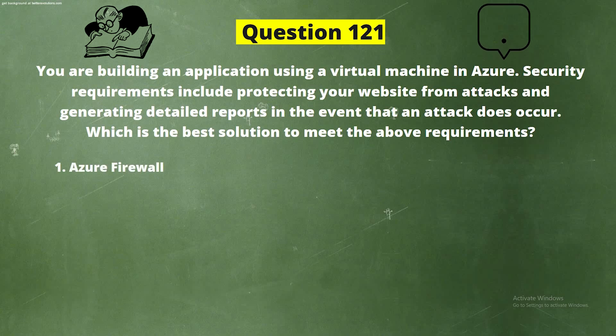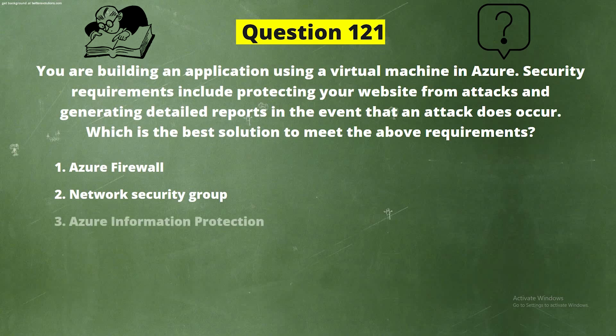And the options are: Option 1, Azure Firewall. Option 2, Network Security Group. Option 3, Azure Information Protection. Option 4, DDoS Protection.